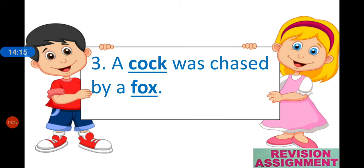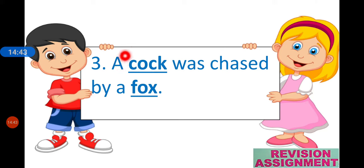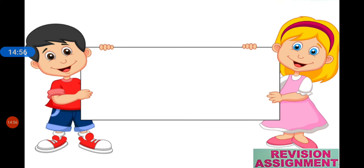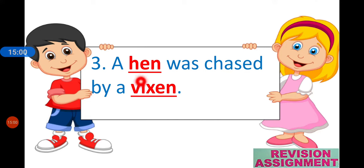Next: 'A cock was chased by a fox.' You need to find the opposite gender of cock and fox. The opposite gender of cock is hen — a three-letter word. And the opposite gender of fox is vixen — a five-letter word. So the answer is: 'A hen was chased by a vixen.'